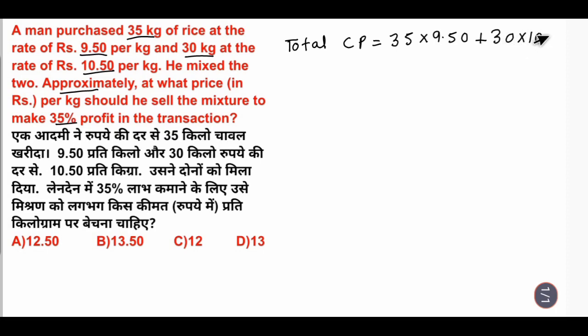When we mix and add, how much will come? From here, 332.5 plus 315, both add to 647.5. So this is my total CP.